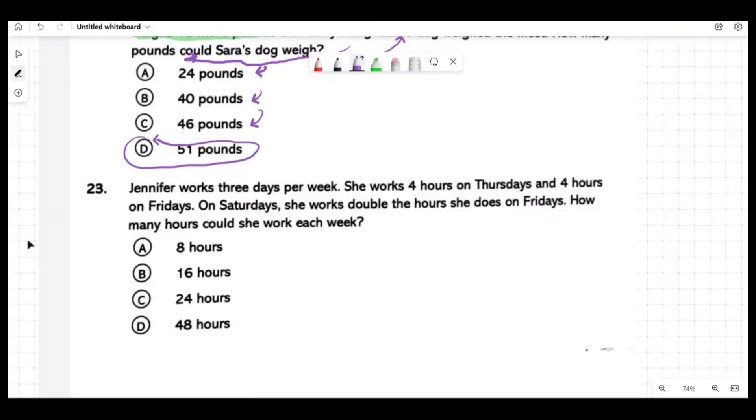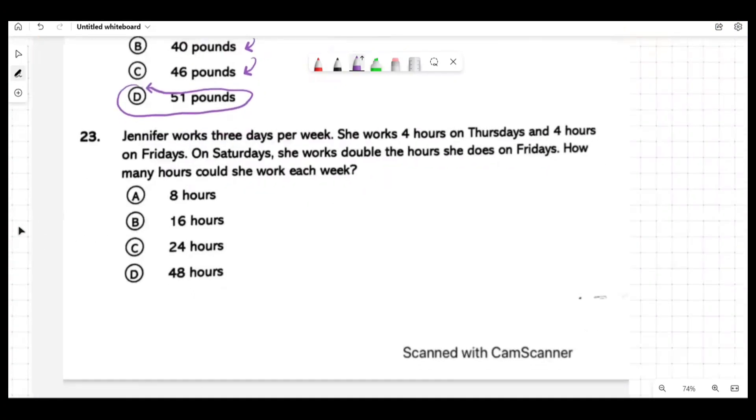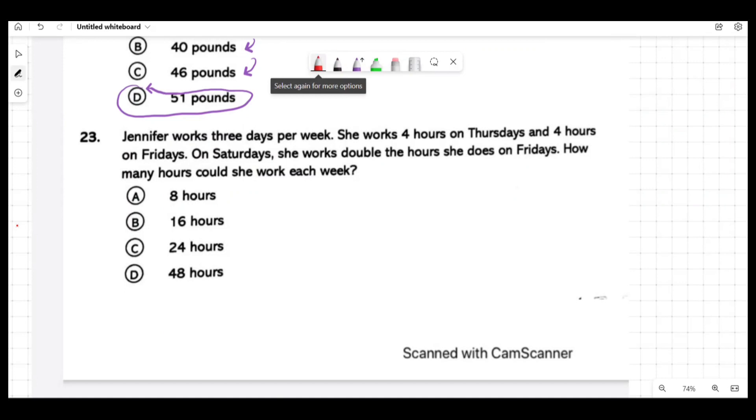Jennifer works three days per week. She works four hours on Thursdays and four hours on Fridays. On Saturdays she works double the hours she does on Fridays. How many hours could she work each week? Nicole, go ahead with the explanation. Okay sir, so first it said on Thursday Jennifer worked four hours, and then on Friday she worked another four hours. Then it said doubled, so what you're going to do is multiply the four times two, then you would get eight. Then he says you're going to double it again, so eight times two, it would be 16. So 16 would be your answer.